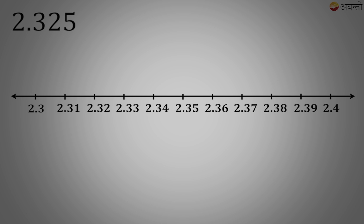So the points would be 2.31, 2.32, 2.33 and so on. Our number is definitely greater than 2.32 but lesser than 2.33, so we will again have to magnify the area between 2.32 and 2.33.